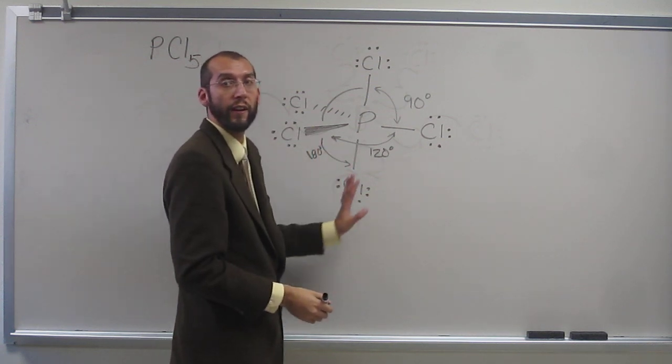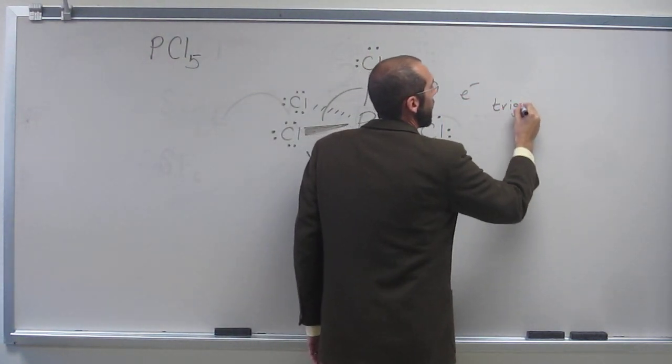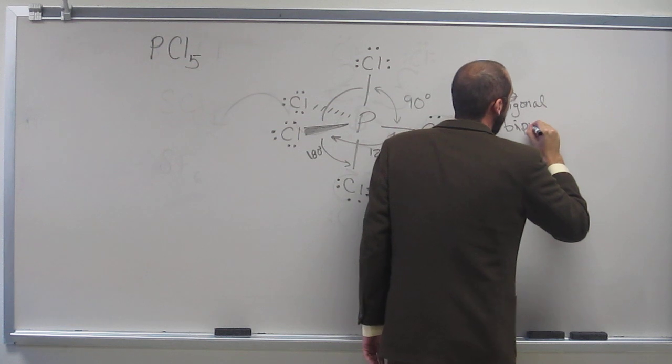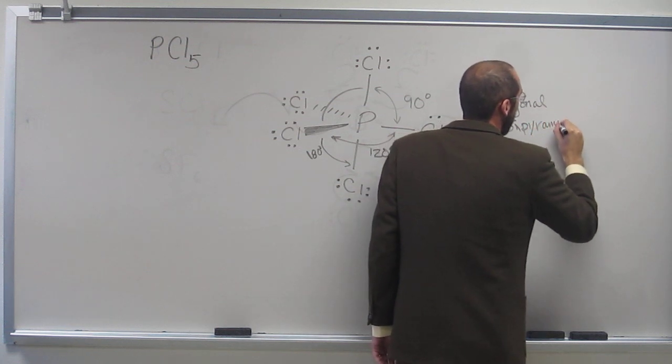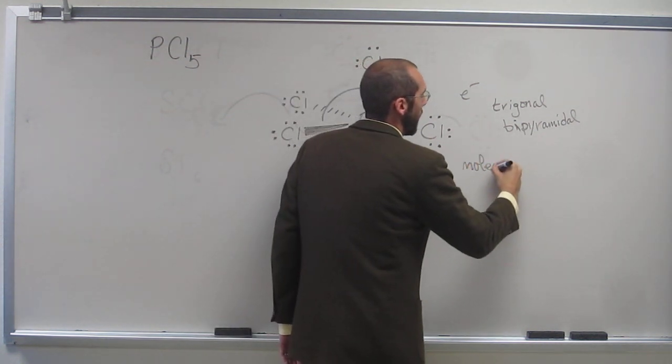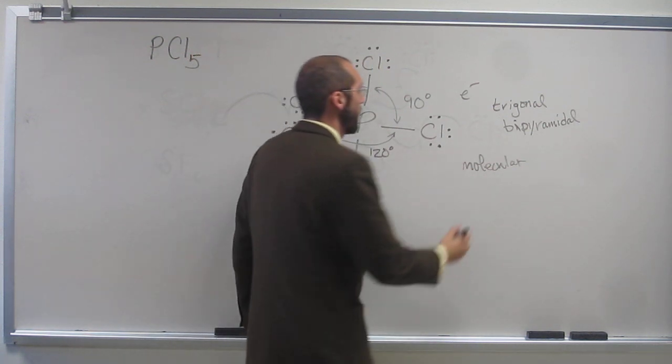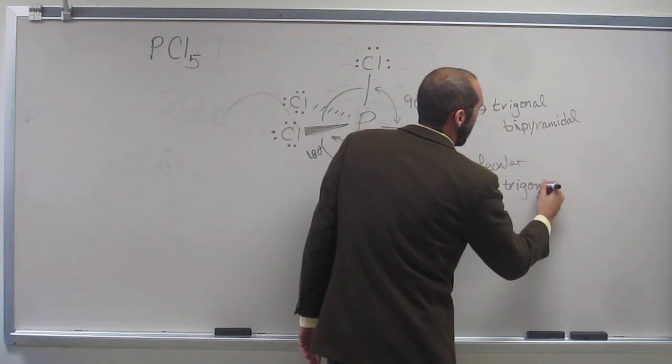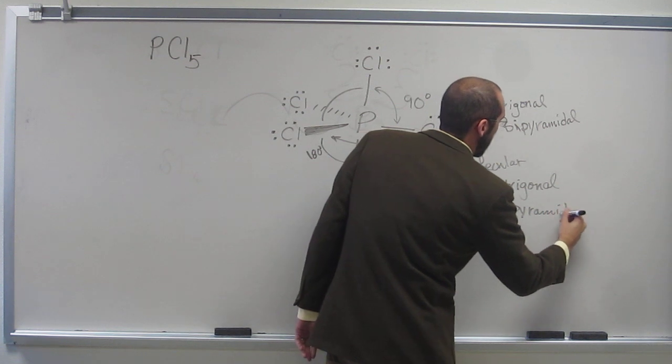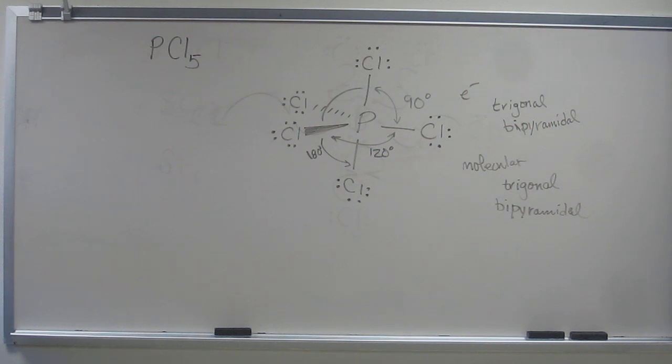So if I asked you, electronic structure, is this trigonal bipyramidal? And the molecular structure is also trigonal bipyramidal. Are there any questions on this one?